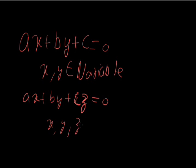Here x, y, and z are variables, and here the power of x is 1, the power of y is 1, and the power of z is 1. That's why it is a linear equation — specifically a linear equation in three variables. The earlier example, ax plus by plus c equal to 0, is a linear equation in two variables because there are two variables.